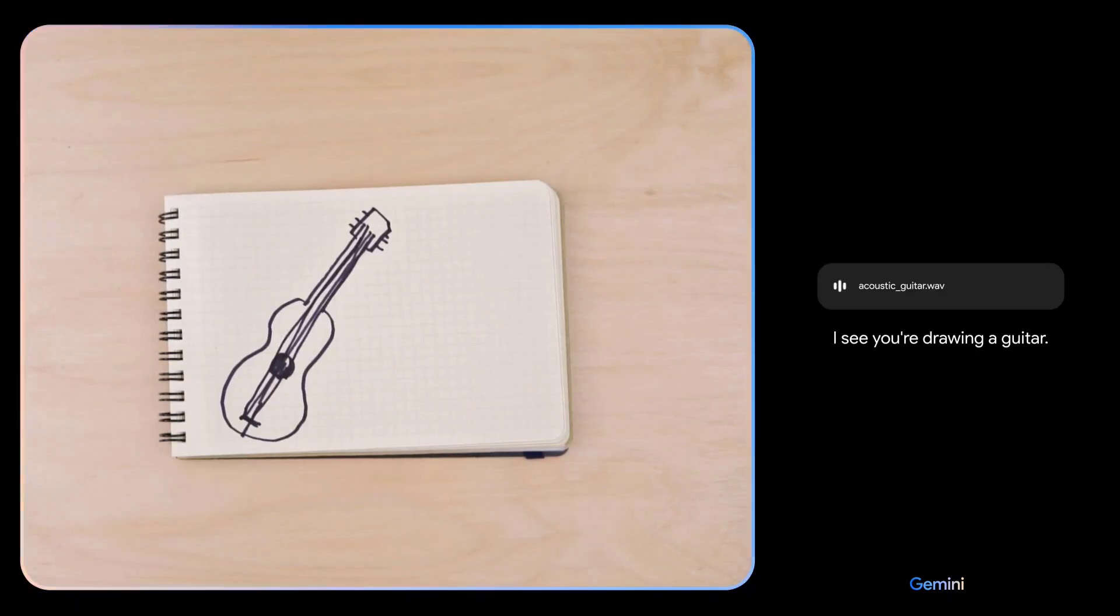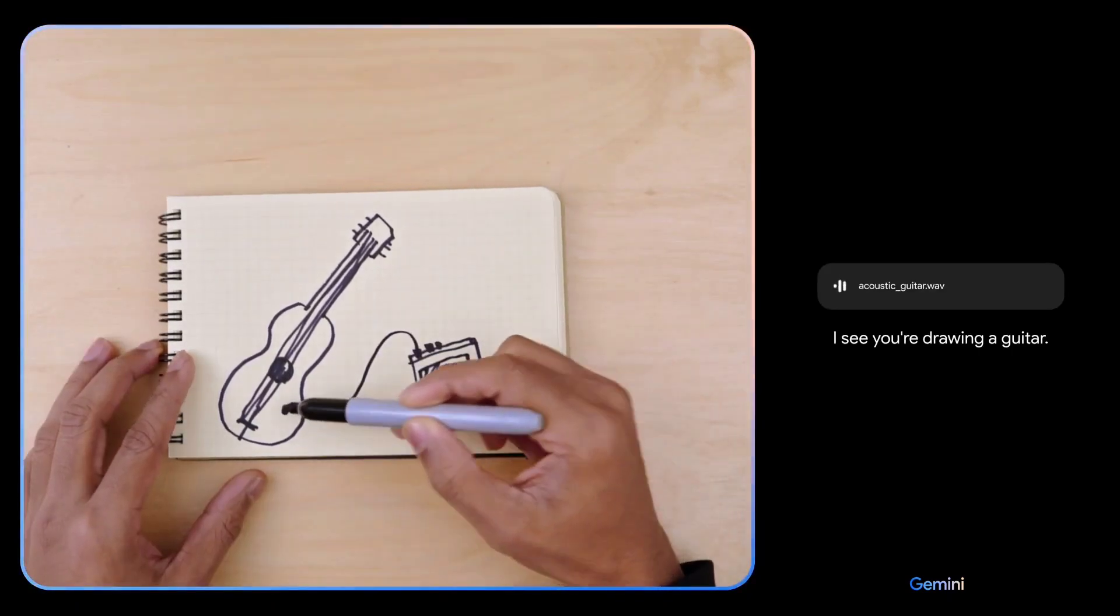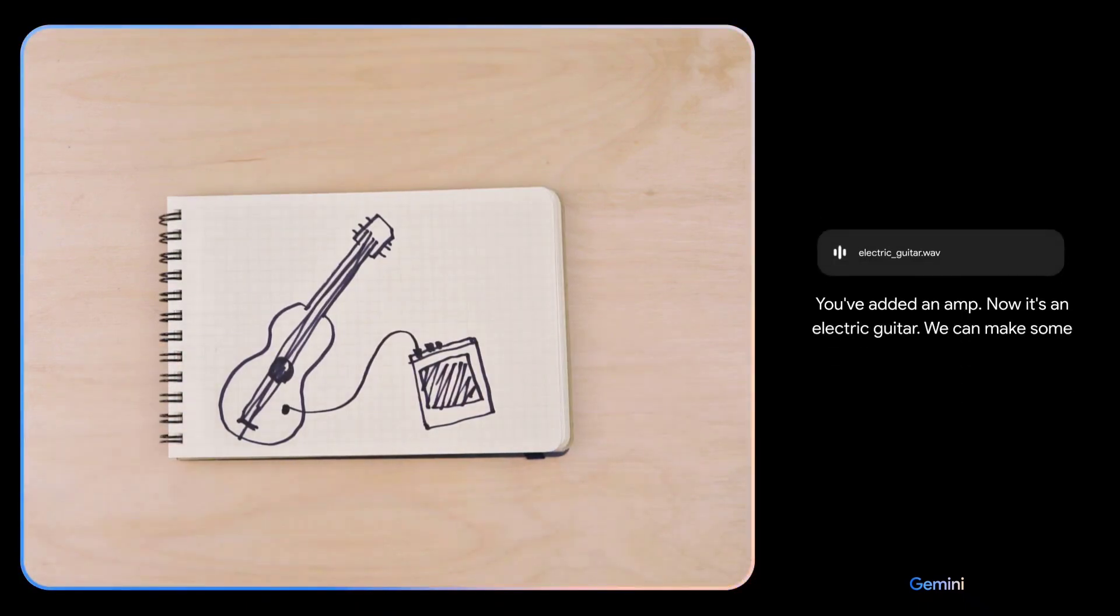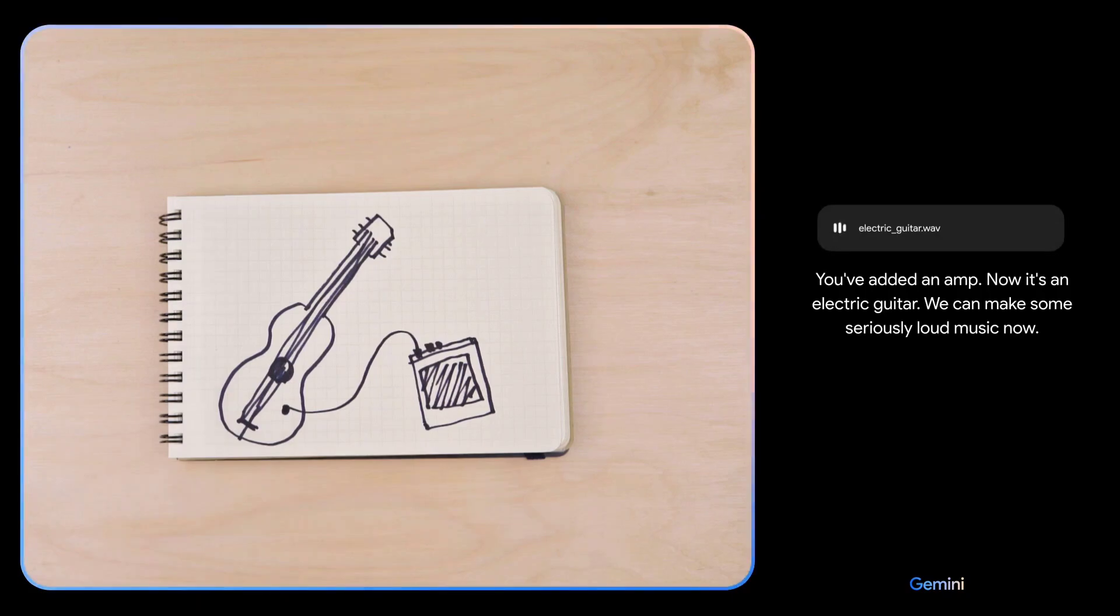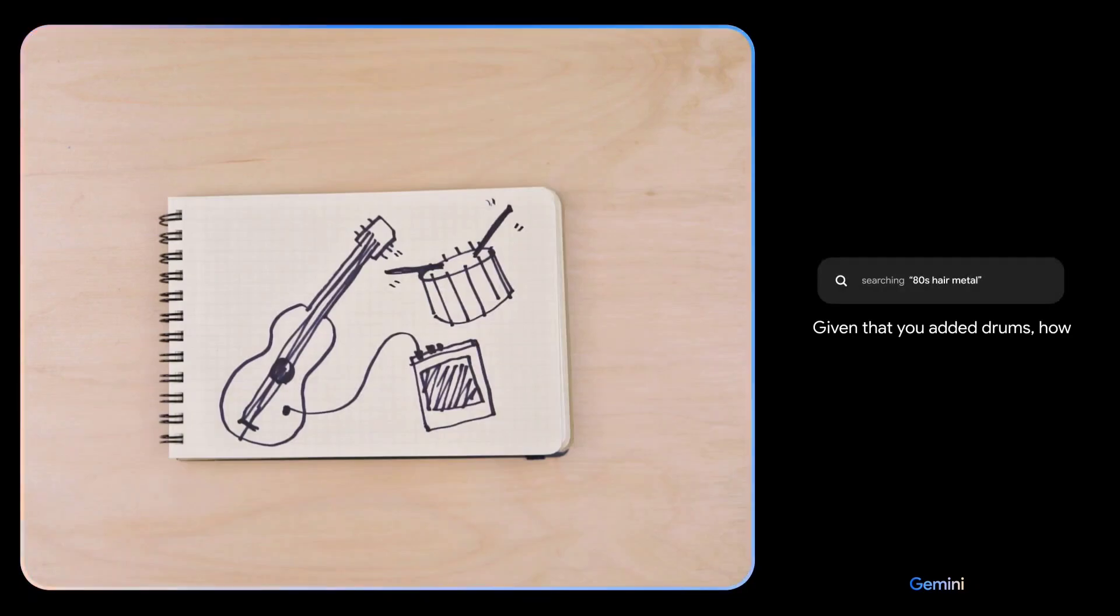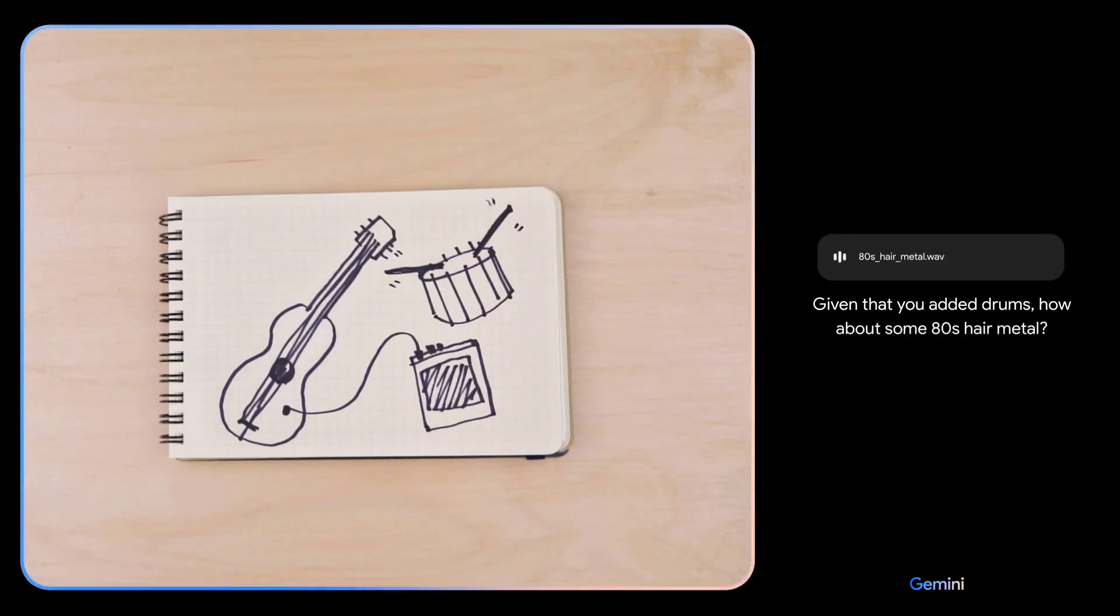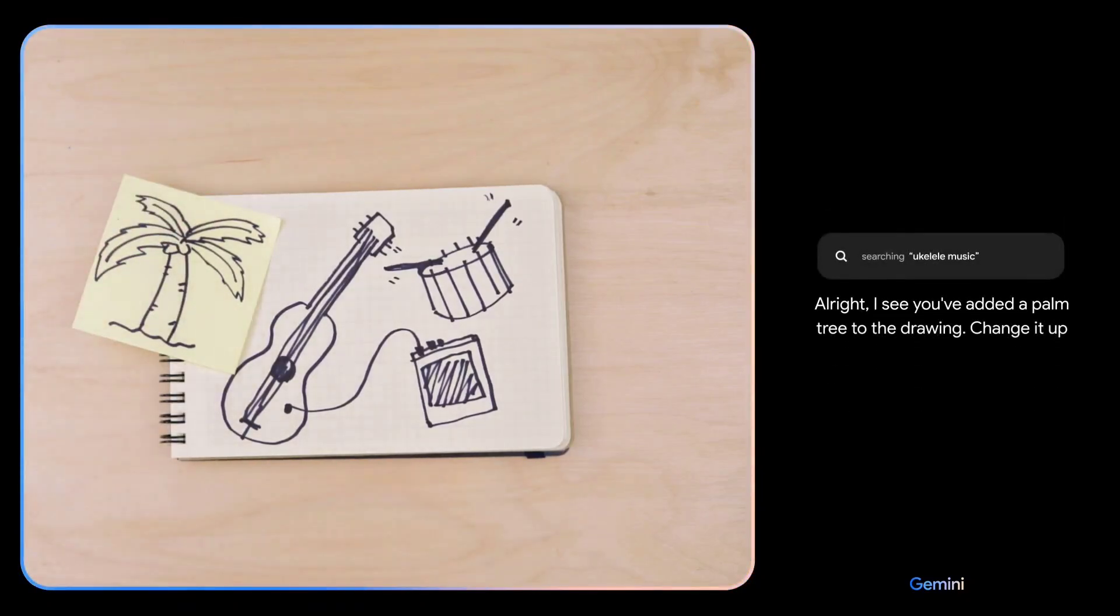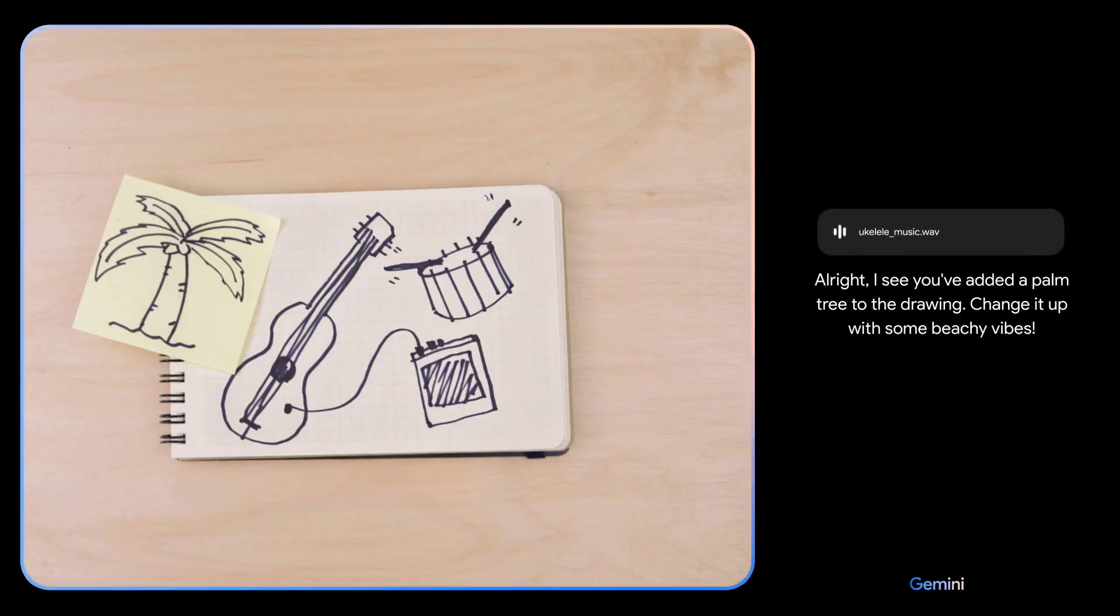I see you're drawing a guitar. You've added an amp now, it's an electric guitar. We can make some seriously loud music now. Given that you added drums, how about some 80s hair metal? Alright, I see you've added a palm tree to the drawing. Change it up with some beachy vibes.